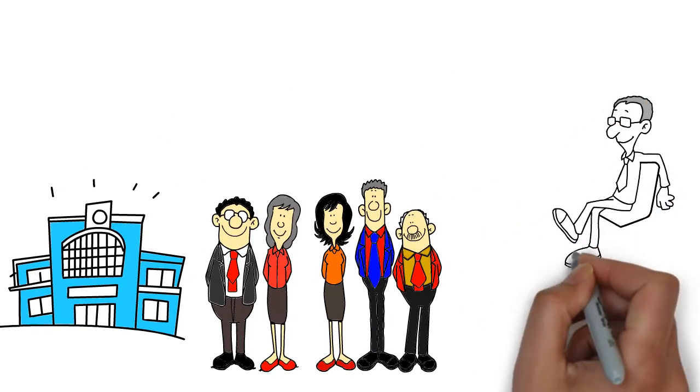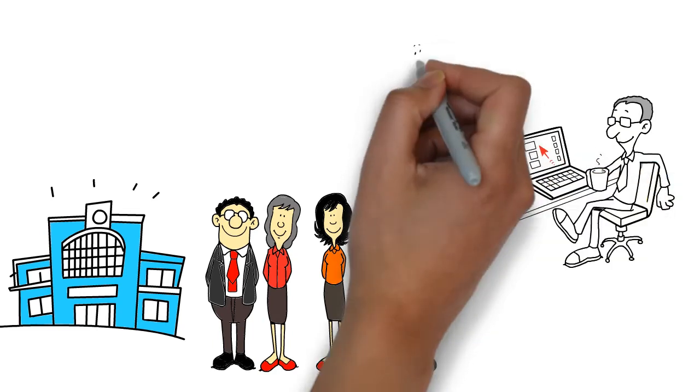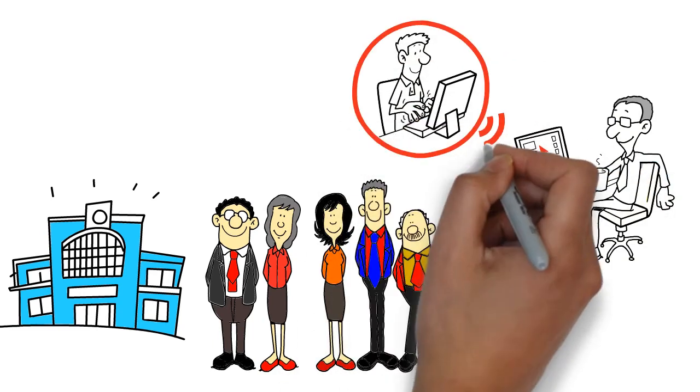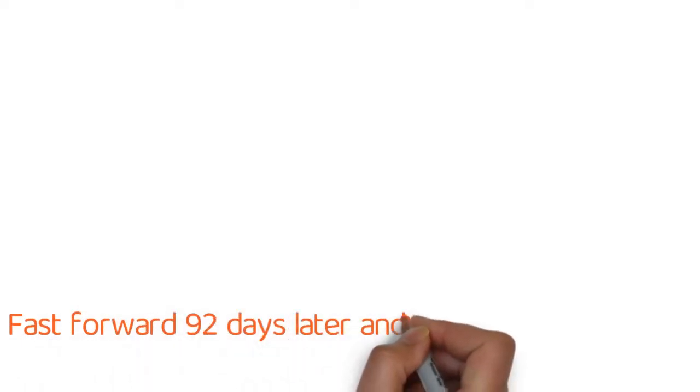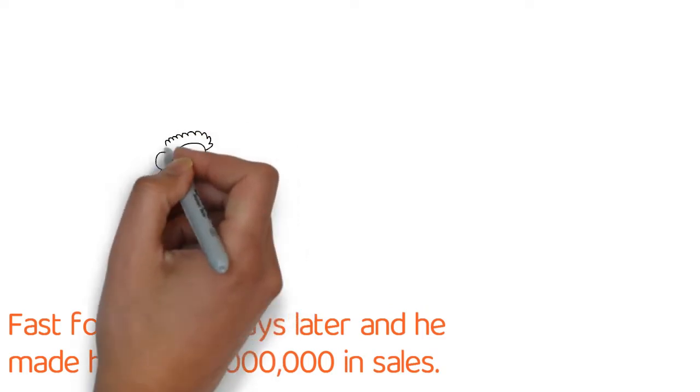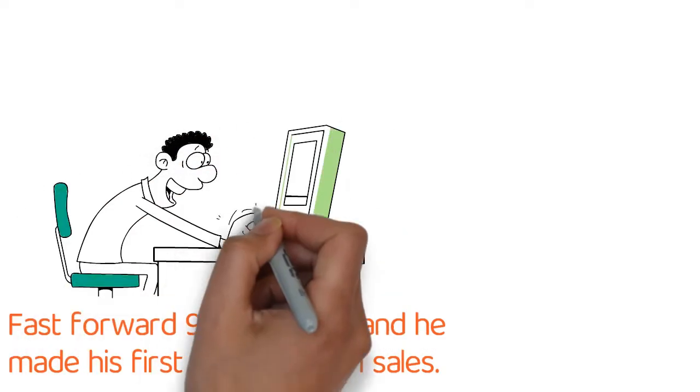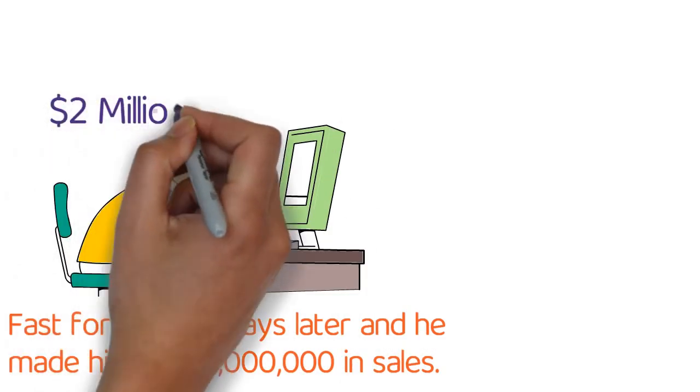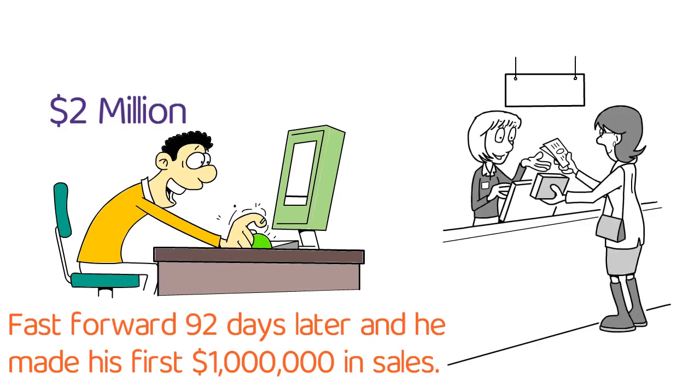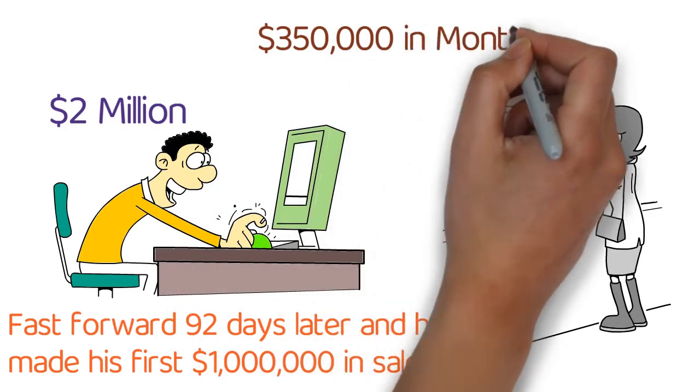At this point, Chapman quit his solar panel business and was only having to work an hour a week on his current online business. Fast forward 92 days later, and he made his first $1 million in sales. Six months into the business, he made $2 million in total sales, and today he makes about $350,000 in monthly sales.